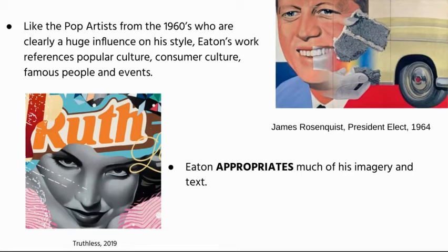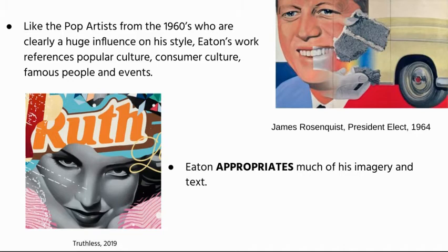Another thing to keep in mind about Eaton's artwork is that he appropriates much of his imagery. If you look at this Truthless image, the Ruth part might look familiar because it's actually from the candy wrapper of the Baby Ruth label — and that's a perfect example of appropriation. Appropriation is a huge concept in contemporary art and music. It means when you take imagery from another source and incorporate it into your own work. It's different from plagiarism because you're not passing it off as your own — he's kind of nodding to consumerism and what that has to do with the idea of truth.